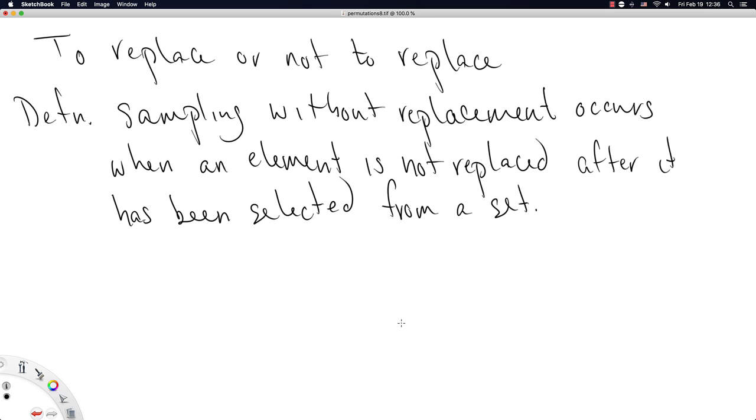Essentially every time I said no repeats in the previous examples of this video, what I was essentially saying was sample without replacement. If you cannot repeat a letter, then once selected out from the original set, you have not replaced that element. Because if you were to have replaced the element, repeats would be allowed. So we call that sampling without replacement.